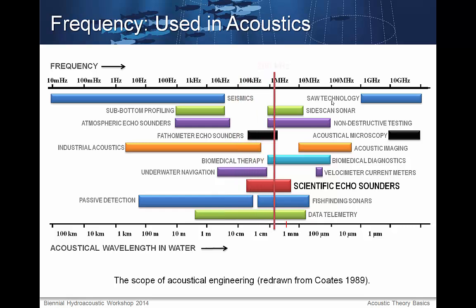Frequency, as used in acoustical systems, can vary greatly. Generally, a sound pulse is created by deflecting a mechanical element in a hydrophone. The rate at which this element is deflected back and forth alters the frequency of the created acoustic wave, while the magnitude of its deflection alters the amplitude of the wave. For different purposes, many different frequencies are used.